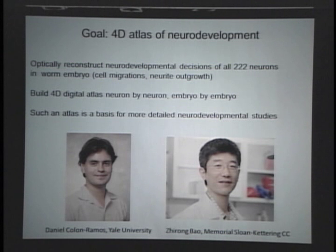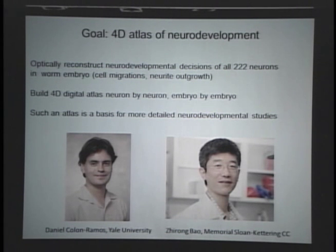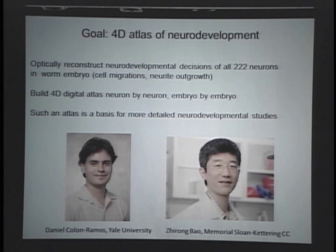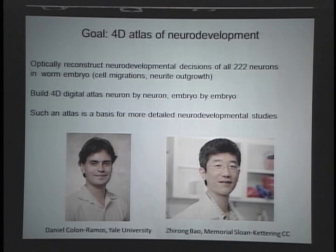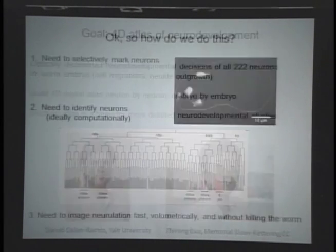What I'm really after is a four-dimensional atlas of neurodevelopment — a dynamic Google map for the worm — where I can optically reconstruct where all the cells are at every point in development, both in space and in time. Where are all the processes? If you had such an atlas of cell motions and cell processes, you could map onto it transcription factor expression dynamics. This is a collaboration with a neuroscientist at Yale and a developmental biologist at Sloan Kettering.